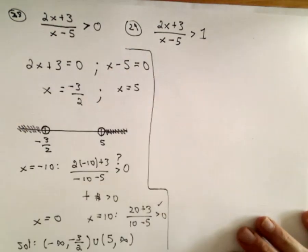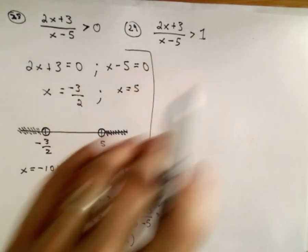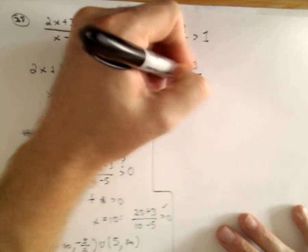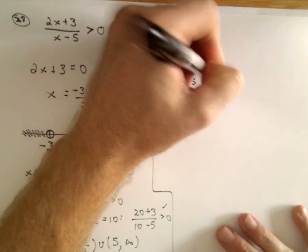Okay, 29 is a little bit harder because we don't have a 0 on one side. So the first thing I'm going to do is just subtract 1 from both sides. And I'm going to write that as 1 over 1.